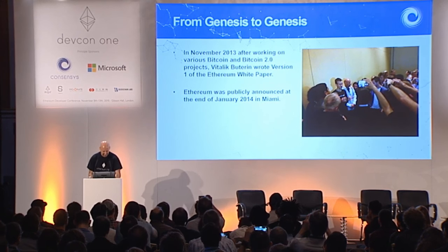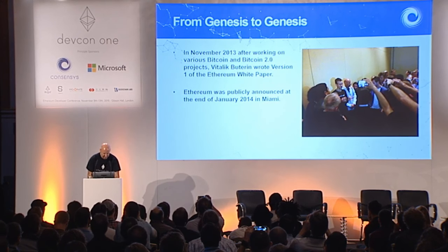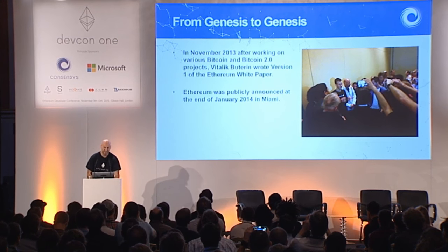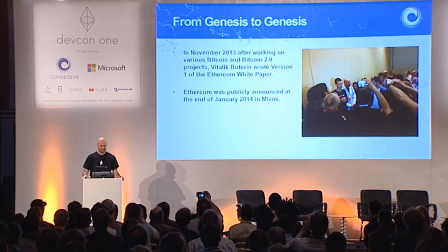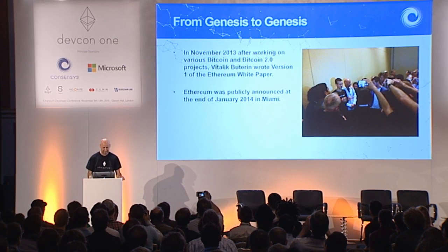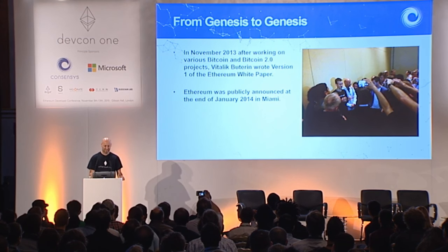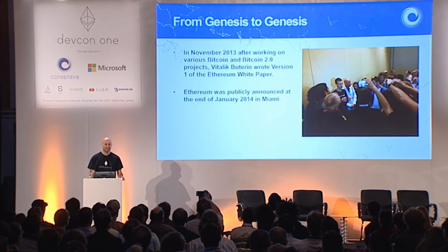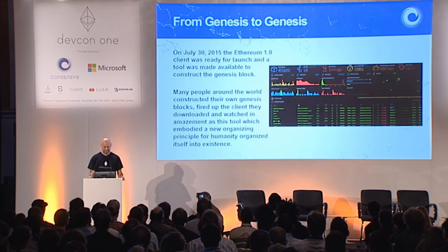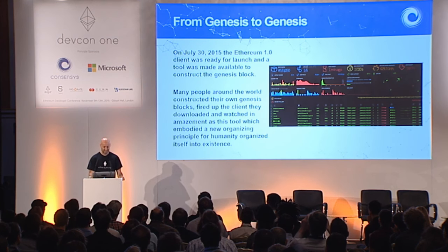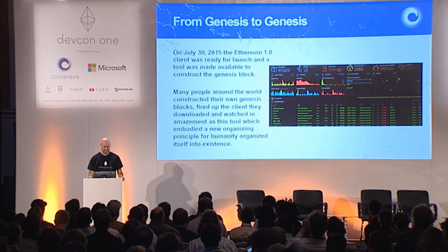November 2013, after working on various Bitcoin and Bitcoin 2.0 projects, Vitalik wrote version one of the Ethereum white paper. In January 2014 in Miami, it was announced to some fanfare.